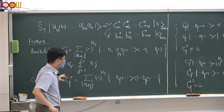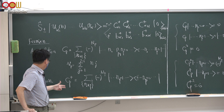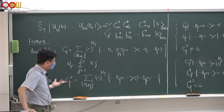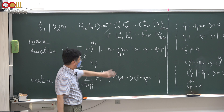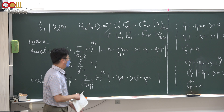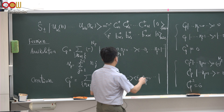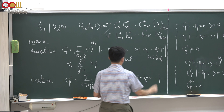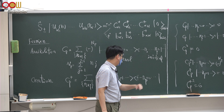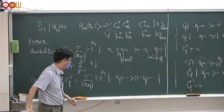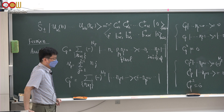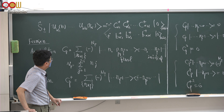Similarly, you could define the creation operator c-dagger p in the same way — you simply reverse the order of initial and final states. So you start from the empty state for state p, and finally you get the single particle state p when you create a single fermion.